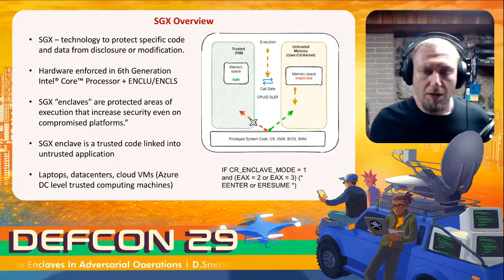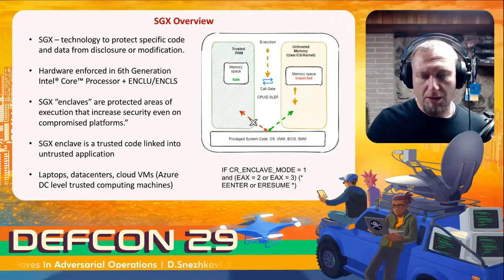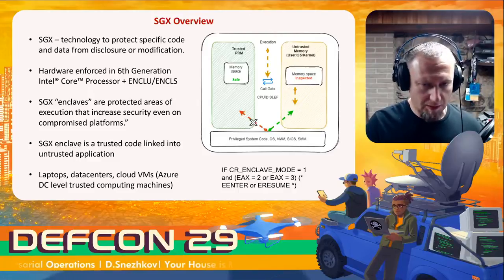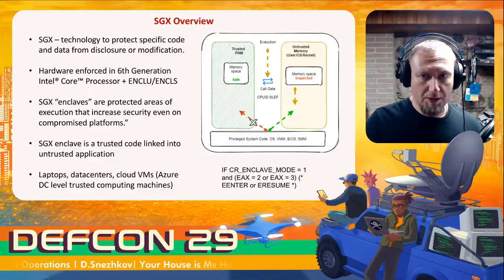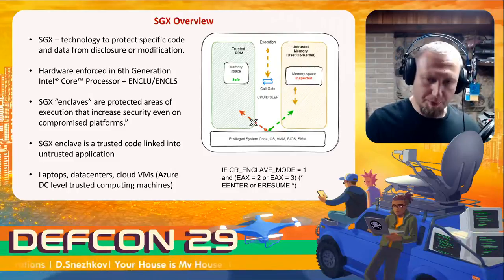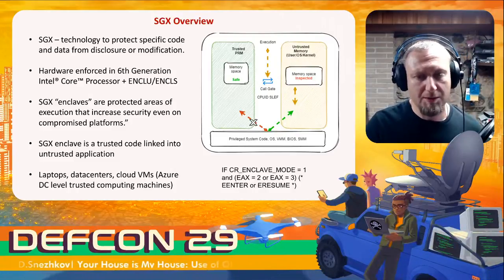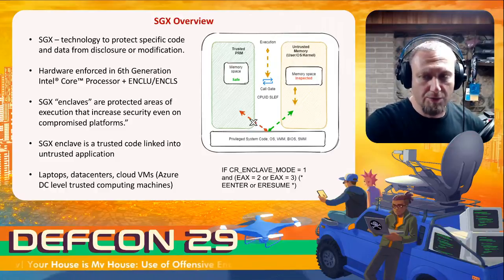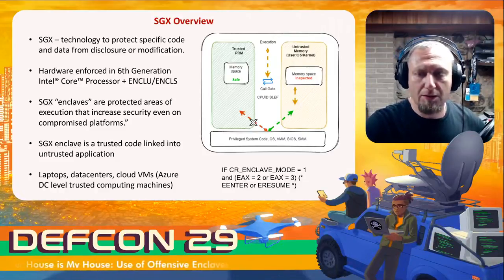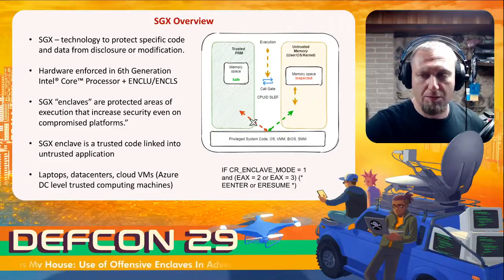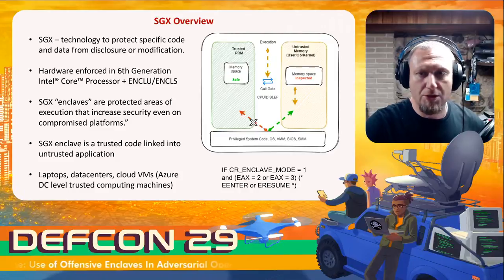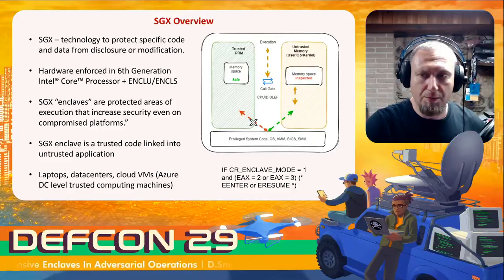This technology is prevalent in high-security environments — wherever Intel Core 6th-generation-plus processors live: laptops, business servers, data centers, and also cloud virtual machines. Namely, we found it on Azure DC-level trusted computing machines. If we find ourselves as operators on those machines, we might be able to use some of that protection for our purposes.